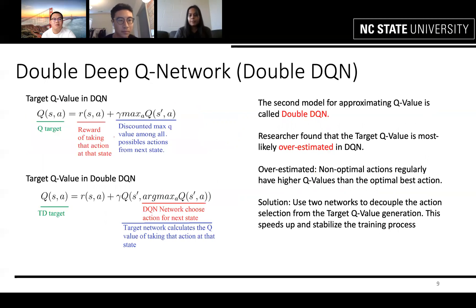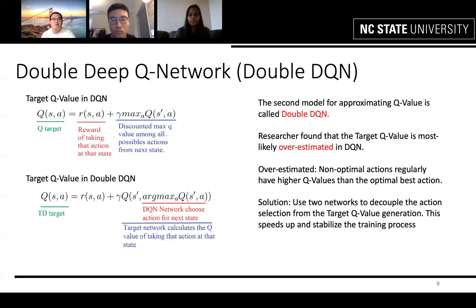The second model for approximating the Q value is called Double DQN. Researchers have found that the target Q value is most likely overestimated in DQN — meaning non-optimal actions regularly have higher Q values than the optimal action. The solution is to use two networks to decouple the action selection from the target Q value generation, which speeds up and stabilizes the training process.